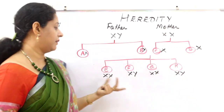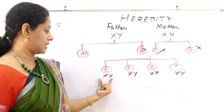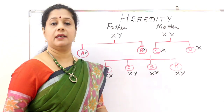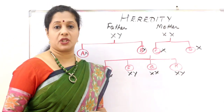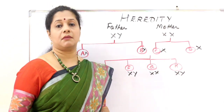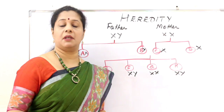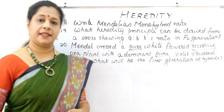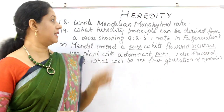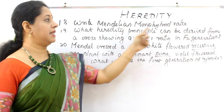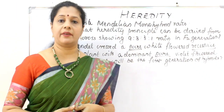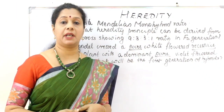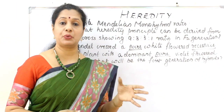The probability of having a daughter is 50% — the progeny ratio is 1 to 1. The Mendelian monohybrid ratio: phenotypic ratio is 3 to 1, and genotypic ratio is 1 to 2 to 1.